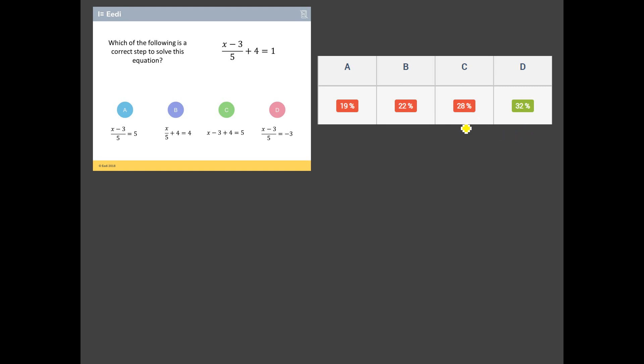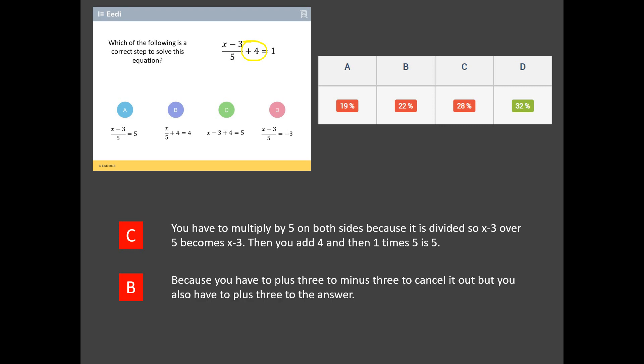Only 32% of students got this right. What's the most popular wrong answer? It's C. Why do students think you can do C? You multiply five by both sides. But we've talked about the problem is the students have forgotten that you also need to multiply that plus four by five. You can see also that B is quite popular as well. The students adding three to both sides. But of course, that take three is tangled up with this divide by five. So it's not that simple.